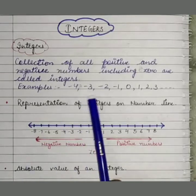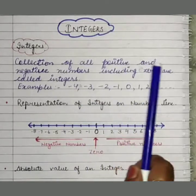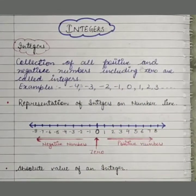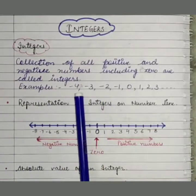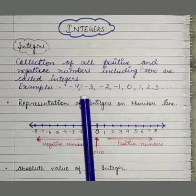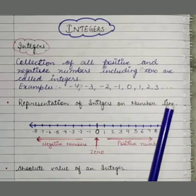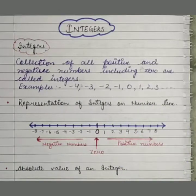A collection of all positive and negative numbers is called integers. For example, minus 4, minus 3, minus 2, minus 1, 0, 1, 2, 3, and so on. Minus 15, plus 14, minus 25, plus 25 — anything. These all are examples of integers.